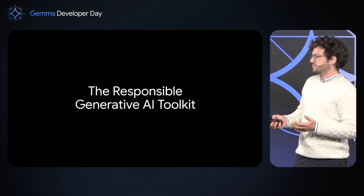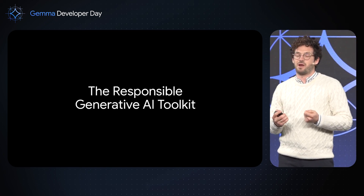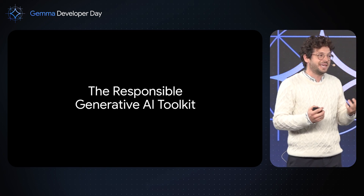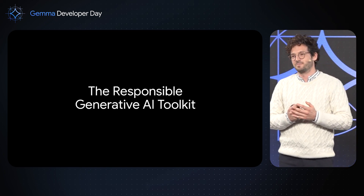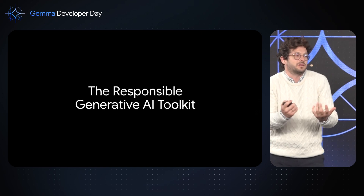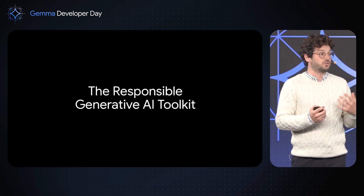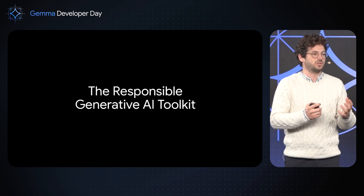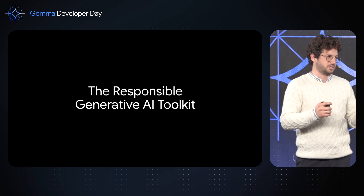Until now, I've mostly talked about what we've done to build Gemma responsibly. But the risk mitigation should be tailored to your application and your specific use case. What really matters is to make the deployment of Gemma responsible. For that, we've released a series of tools, assets, and guidance — and that's the Responsible Generative AI Toolkit, our third pillar in our responsible approach.